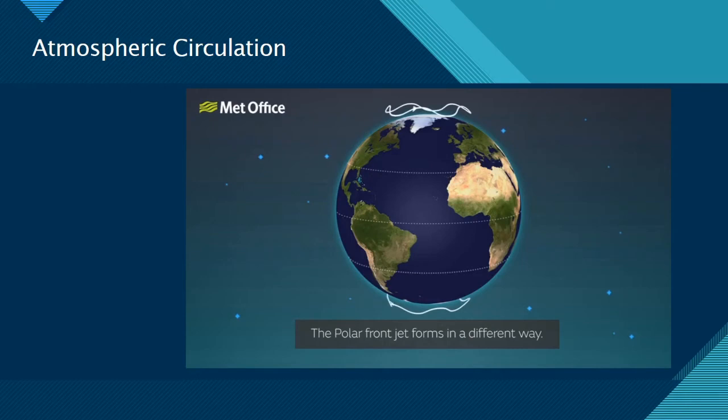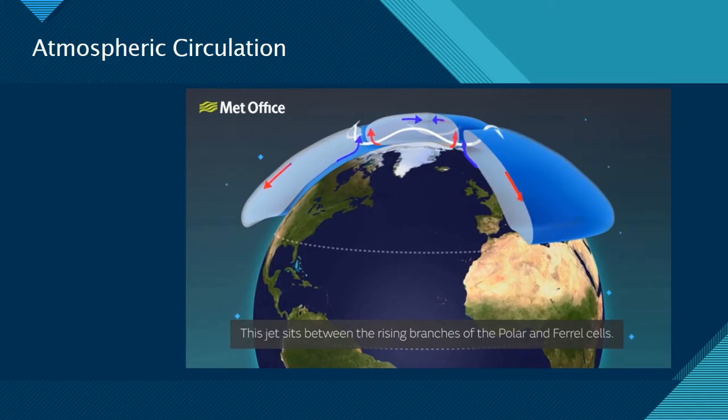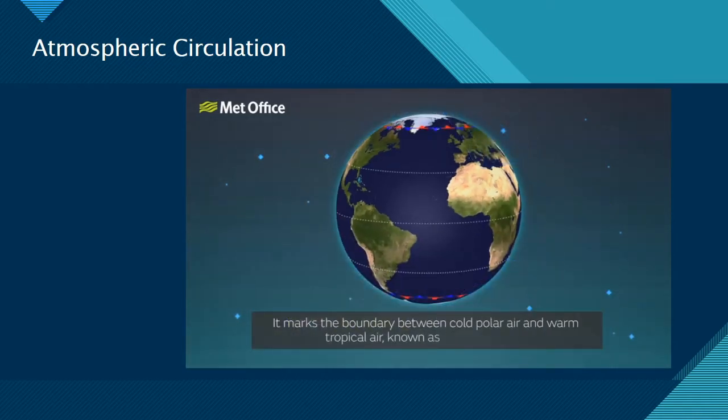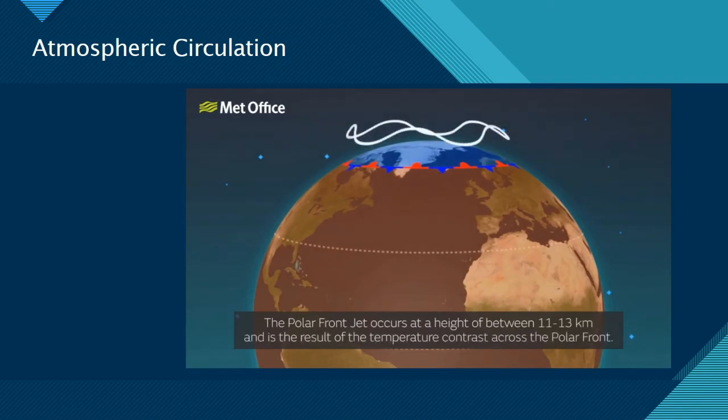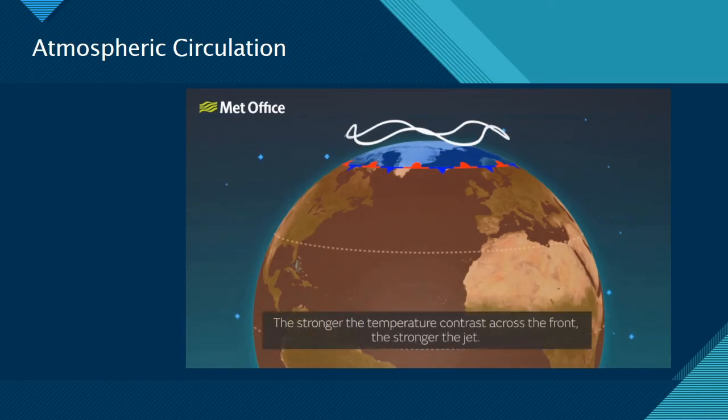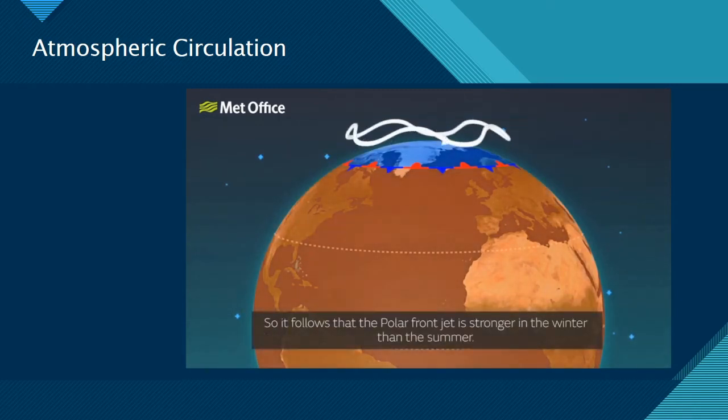The polar front jet forms in a different way. This jet sits between the rising branches of the polar and Feral cells. It marks the boundary between cold polar air and warm tropical air known as the polar front. The polar front jet occurs at a height of 11 to 13 kilometres and is primarily the result of the temperature contrast across the polar front. The stronger the temperature contrast across the front, the stronger the jet. So it follows that the polar front jet is stronger in the winter than the summer.